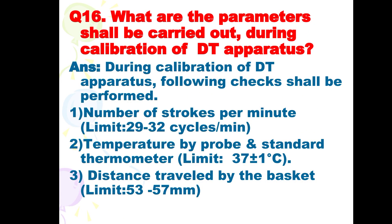Next is: what are the parameters to be carried out during calibration of the DT apparatus? During calibration of the DT apparatus, the following checks shall be performed: number one, number of strokes per minute; number two, temperature by probe and standard thermometer; and number three, distance travelled by the basket.